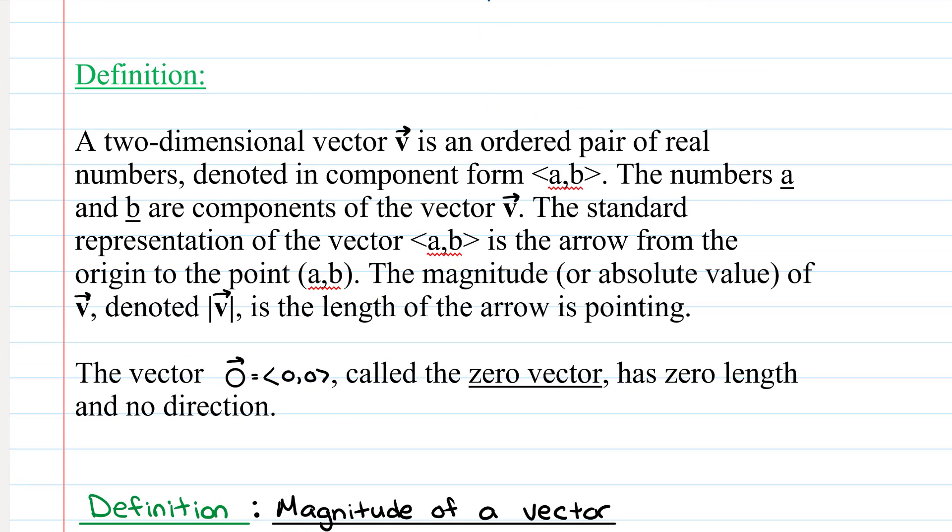A two-dimensional vector, which we represent as v with an arrow over it, is an ordered pair of real numbers denoted in component form as a comma b. And notice we don't use parentheses, we use those greater than or less than signs, which I like to call pointy brackets. Not curly brackets, but pointy brackets.